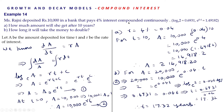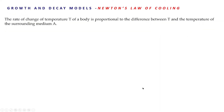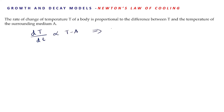This is the compound interest model. The next model is Newton's law of cooling. According to Newton's law of cooling, the rate of change of temperature T of a body is proportional to the difference between the body temperature T and the temperature of the surrounding medium. That is, dT/dt is proportional to (T − A).